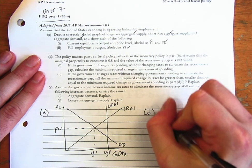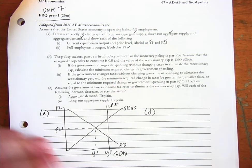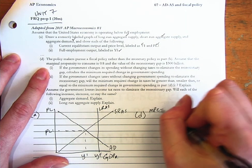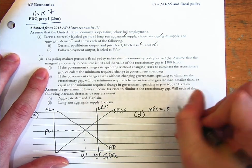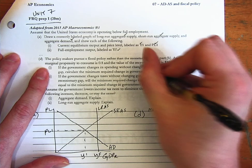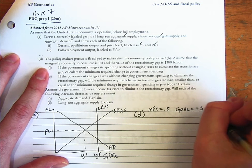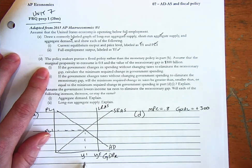Let's do part D. Policymakers pursue fiscal policy rather than monetary. Assume the MPC is 0.8. MPC equals 0.8, and the gap is 300. So it's a recessionary gap, so our goal is to add 300. The difference between here and here is 300.